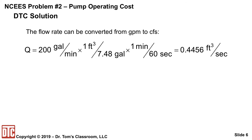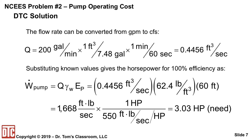Let's convert the 200 gallons per minute to cubic feet per second: 0.4456. Then calculate Q gamma E — multiply by the gamma of water and the given pump head of 60 feet. We get 1668 foot-pounds per second, and converting to horsepower by dividing by 550 foot-pounds per second per horsepower, we get a little over 3 horsepower needed.